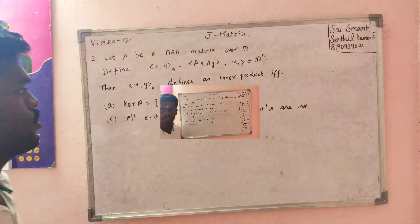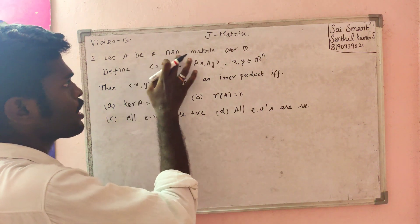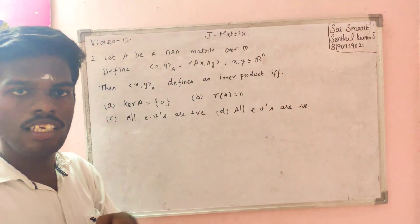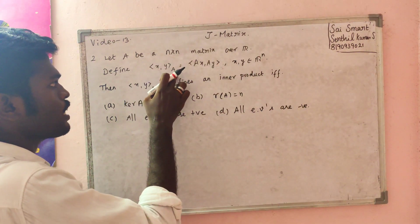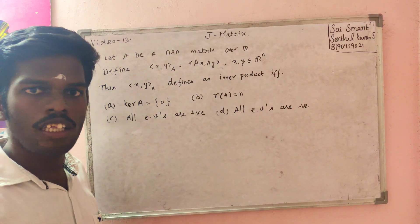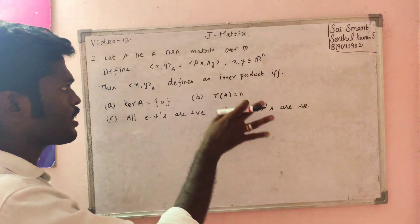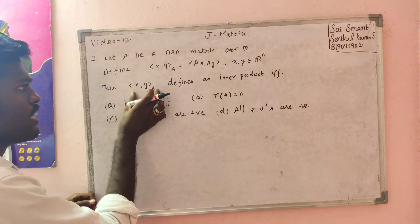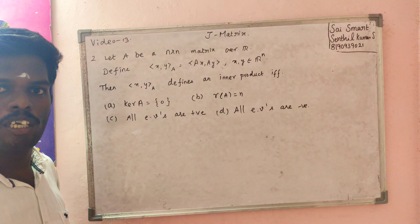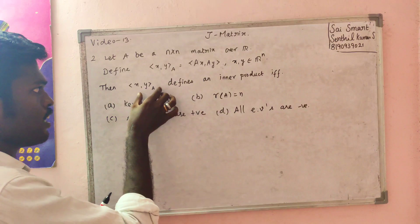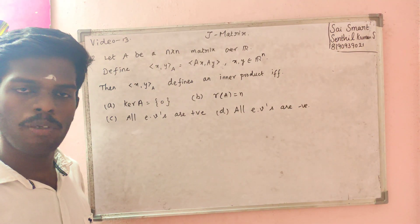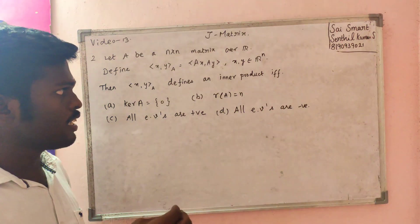Next problem — Problem number 2. This is an n×n matrix whose entries are real. Define the inner product: ⟨x, y⟩_A equal to ⟨x, Ay⟩. This problem is solved by checking the inner product conditions. We need to verify whether this satisfies all inner product conditions.